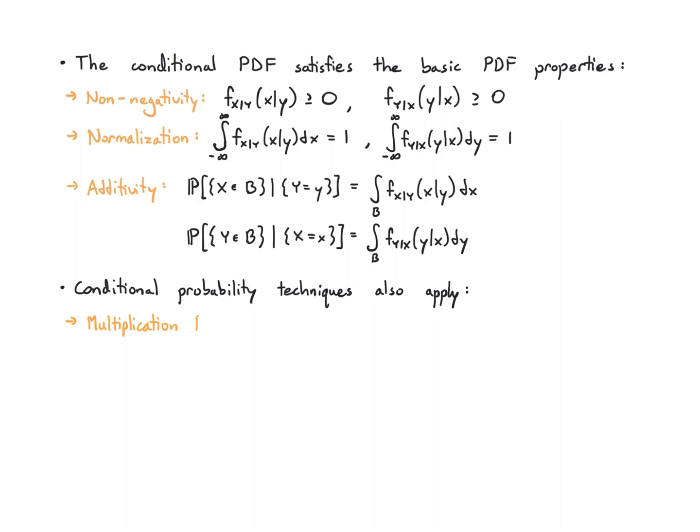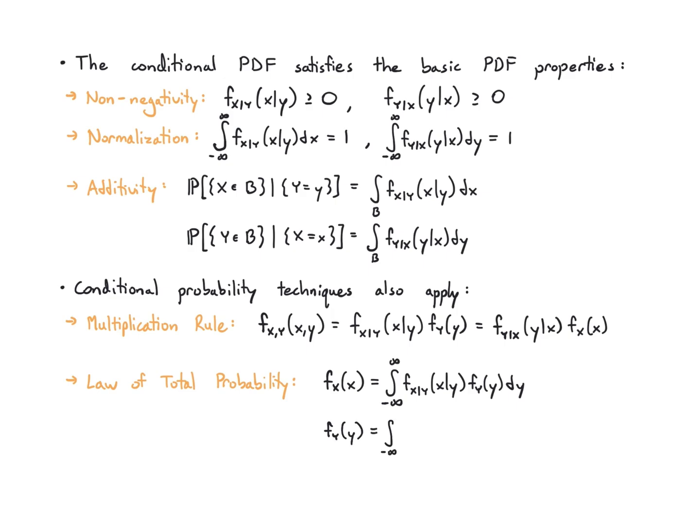I also have the same conditional probability techniques that we've seen before. So I have the multiplication rule. So that means if I want the joint PDF, I can multiply a conditional PDF times the appropriate marginal PDF. I have the law of total probability, which means if I want a marginal PDF and I just have a conditional and marginal, well I can integrate that product with respect to the variable I don't want. And Bayes rule lets me flip conditioning, so if I have one conditional PDF and both marginals, then I can work out the other one. And this is how I do it in one direction and in the other direction, and you can look these up when you need them.